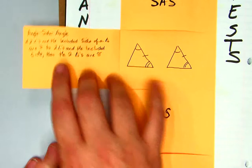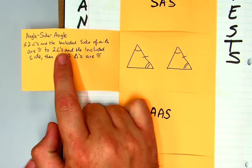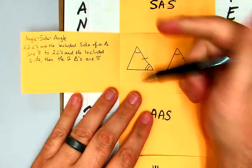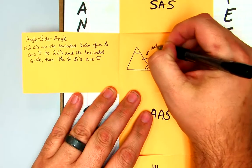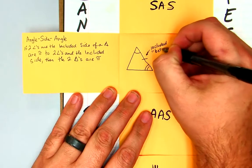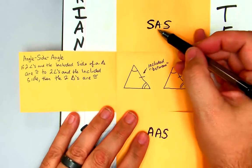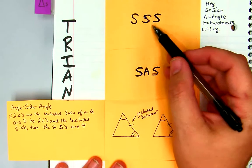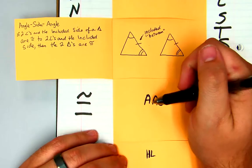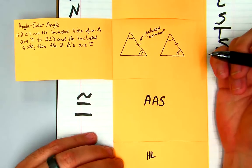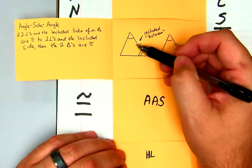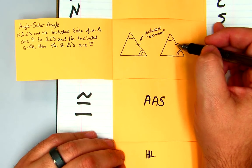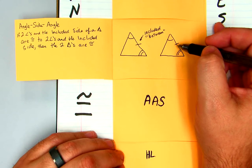If two triangles - and the included side, the key word, remember, is included side. Included means between. The angle is included between the two sides here. This side you can think of as the side included between the two sides, so the middle term is always going to be that included side. If you have two angles and the included side are congruent to two angles and the included side, then you know that the two triangles have to be congruent to each other.